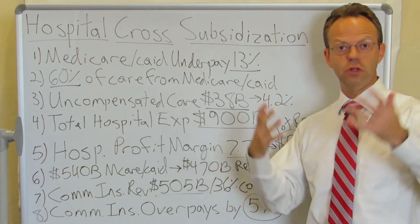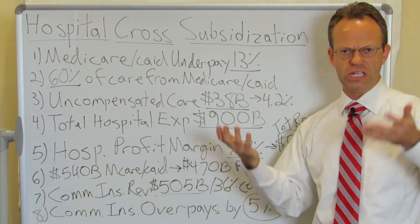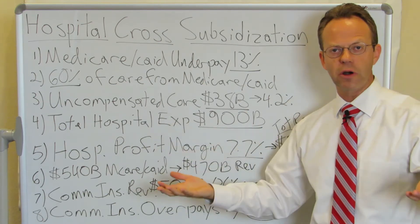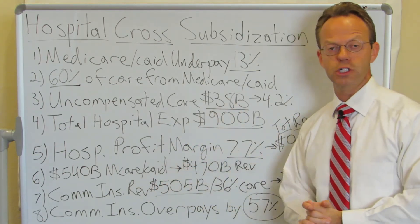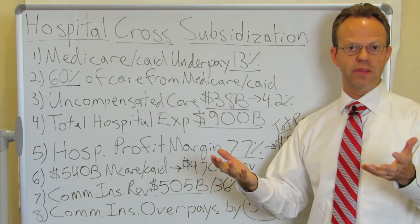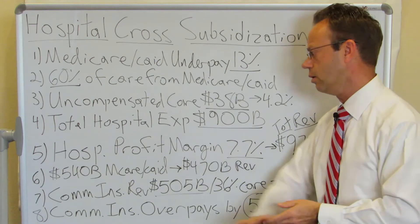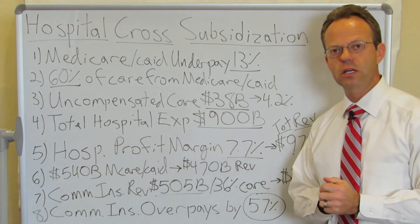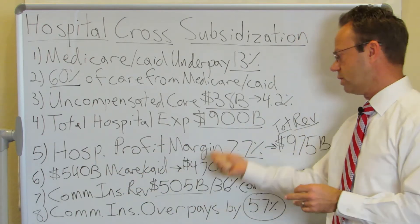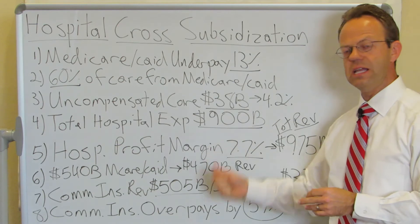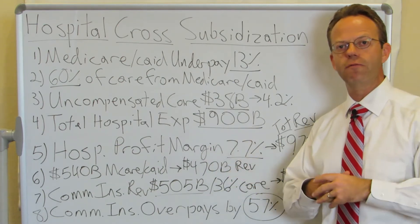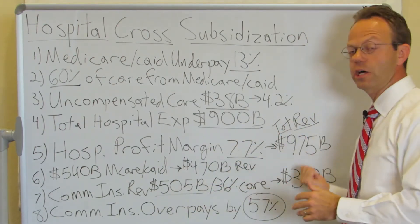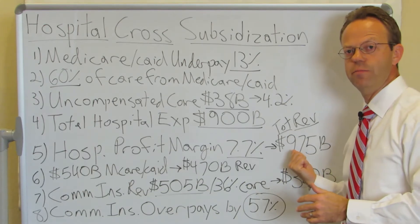Hospitals still make money — they still have a profit margin. Even non-profit hospitals still have a profit margin. That was reported by the American Hospital Association as well: 7.7%. So knowing what their expense is and knowing what their profit margin is, you can then solve for total hospital revenue, which was $975 billion.